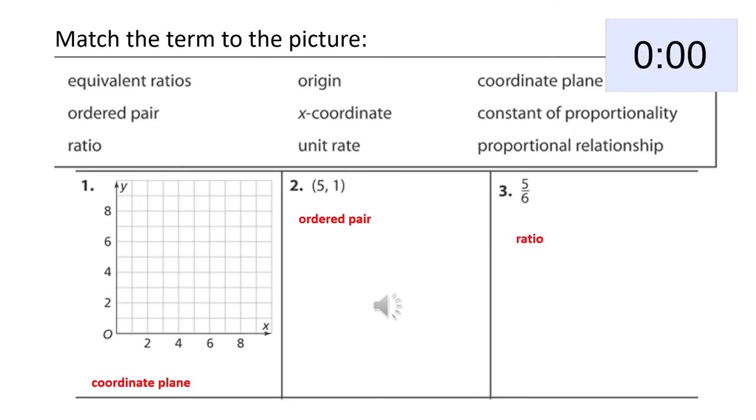The first answer is coordinate plane. Although on this coordinate plane you only see the positive x and positive y values, you could also do negative values if you were to extend the x and y axes all the way to the left and to the bottom. For the second one, ordered pair, you have an x and a y value there. And the third, it looks like a fraction, but remember we can represent ratios as one number over the other number, say five students for every six teachers in a room.